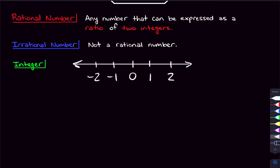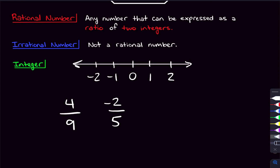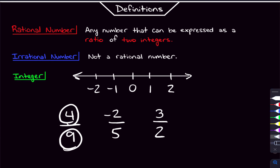When we talk about a ratio of two integers, what that means is a fraction with an integer in the numerator and an integer in the denominator. So an example would be four over nine. What about negative two over five? That still works. If we have something like three over two, that works too — it's still an integer in the numerator and an integer in the denominator every single time. That is a ratio of two integers.